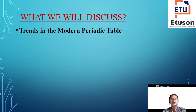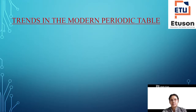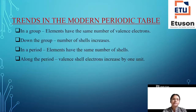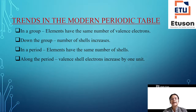Today we are going to discuss trends in the modern periodic table. First of all, in a group, what happens? In a group, the elements have the same number of valence electrons. All elements have the same valence electrons.